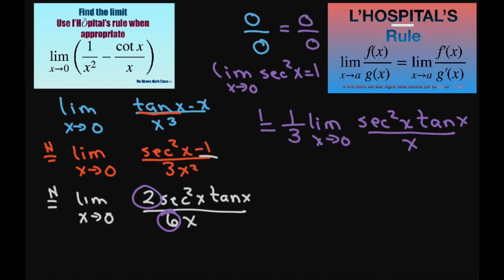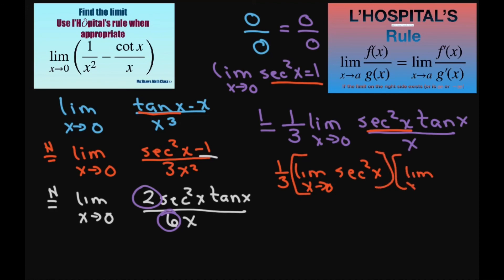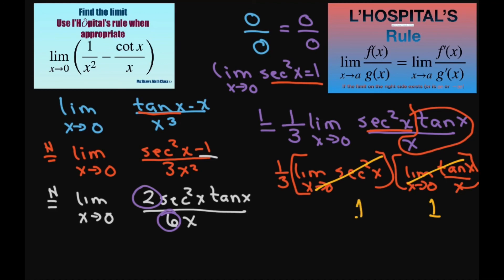We already know that the limit of secant squared of x as x approaches 0 equals 1. So I can separate this out as 1 third times the limit as x approaches 0 of secant squared of x, times the limit as x approaches 0 of tan of x divided by x. We know this equals 1 and we know this equals 1, so we get 1 third times 1 times 1, which equals 1 third. And that is your limit.